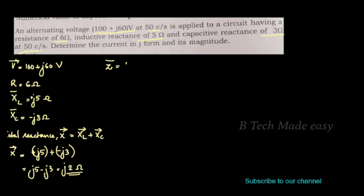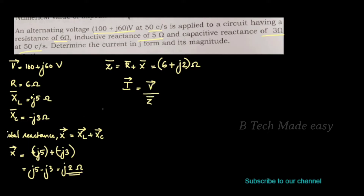Now the impedance vector Z equals vector R plus vector X. The value of R is 6 and total reactance is j2, so Z equals 6 plus j2.